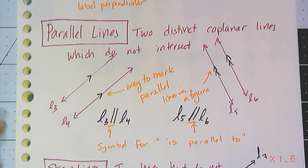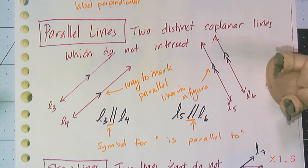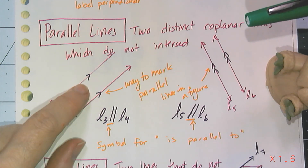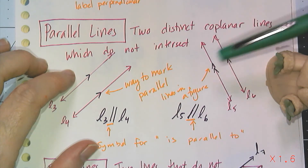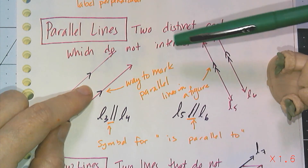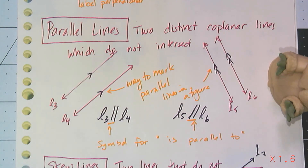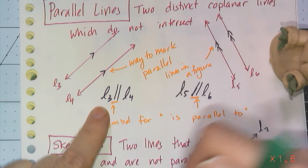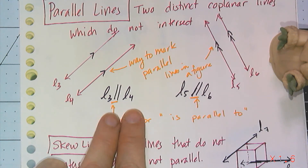You can't talk about perpendicular lines without mentioning parallel lines. Parallel lines are two distinct coplanar lines that do not intersect — they have to be in the same plane to be considered parallel. To mark parallel lines in a figure, use arrows in the body of the line. One set of arrows means two lines are parallel; a second set of arrows distinguishes additional pairs. The symbol for parallel looks like two little parallel bars, so 'L3 ∥ L4' represents the sentence 'line three is parallel to line four.'